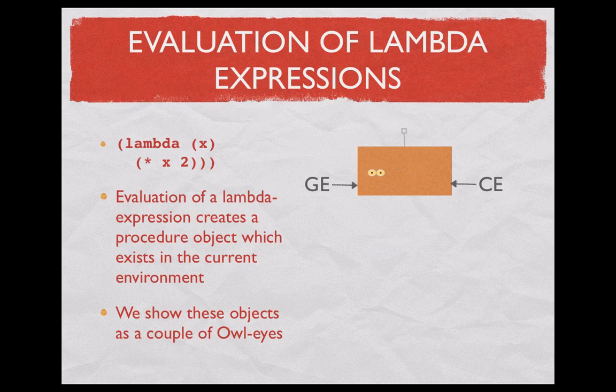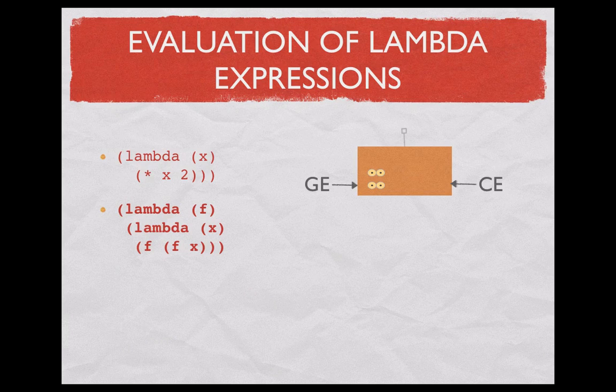Let's see what happens when we evaluate lambda expressions. Lambda expressions result in procedural objects — whenever we evaluate a lambda expression we get a procedure. These are depicted in the diagram as two circles, and that corresponds to a procedure. We define another lambda expression and as you see we get two more circles. On the left we have two lambda expressions, and evaluation of those two leads to two procedural objects.